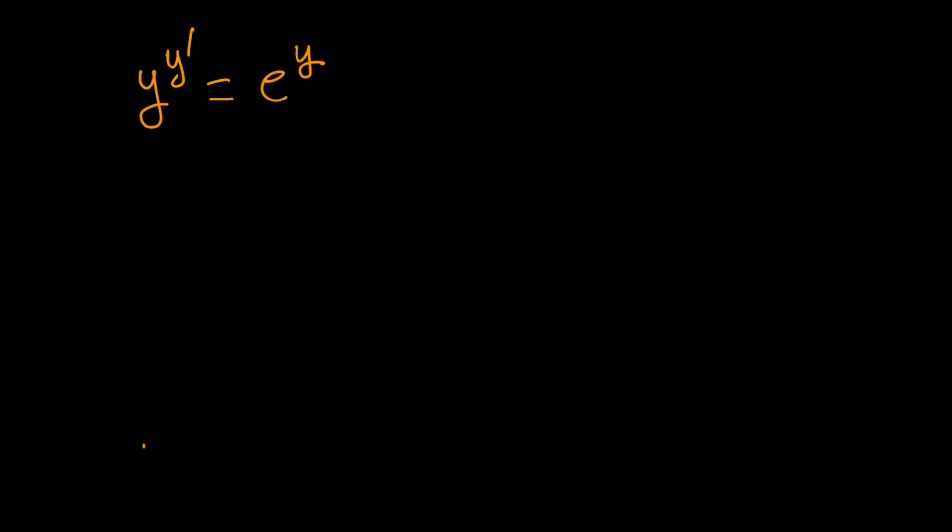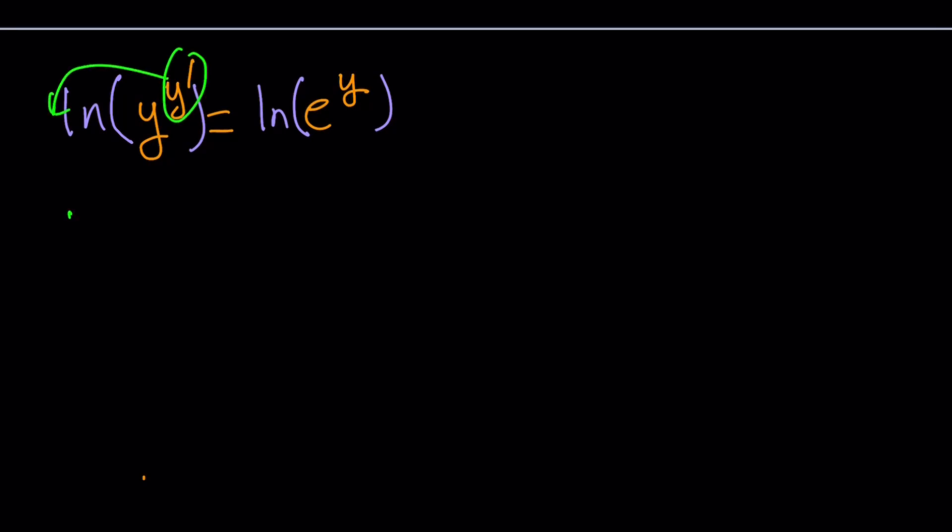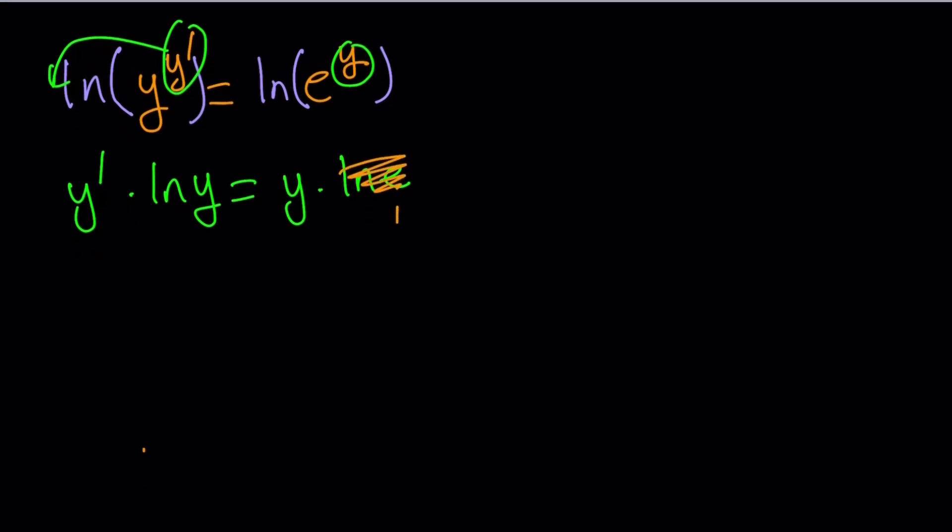Now here's what I'm going to do. I'm going to ln both sides. Anytime I see a variable in the exponent, I'll bring it down. That's my goal. So let's go ahead and ln both sides. Properties of logs allow us to bring this down, so we can bring this to the front. y prime multiply by ln y equals y times ln e. But ln e is equal to 1, so we don't have to worry about it. So now we end up with a simpler equation: y prime ln y is equal to y.